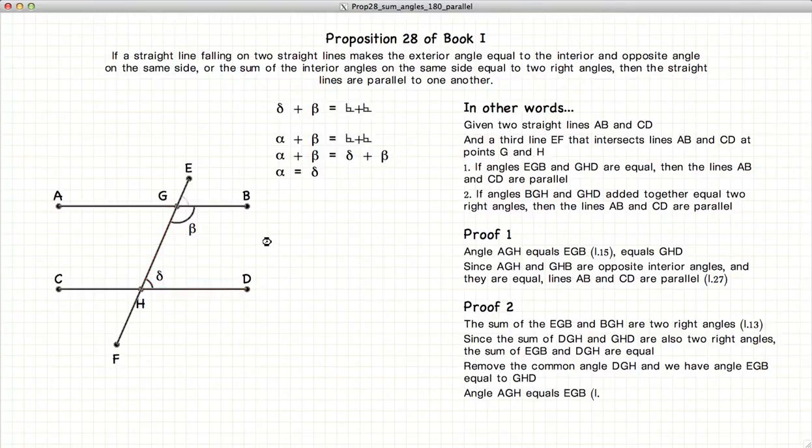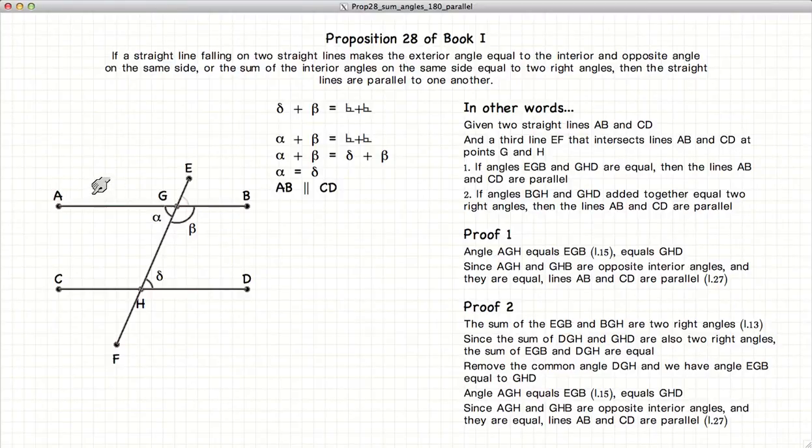And using the methods that we described earlier, if this is alpha, then AGH is alpha, and we have our opposite and interior angles equal. And if the opposite interior angles are equal according to proposition 15, then AB and CD are parallel.